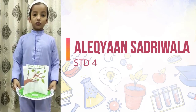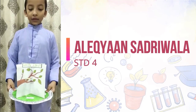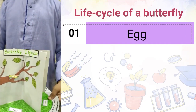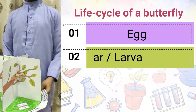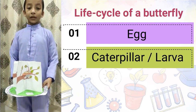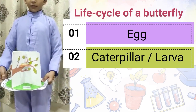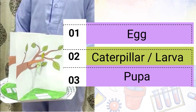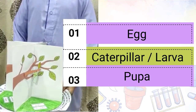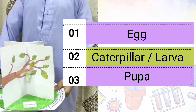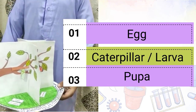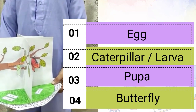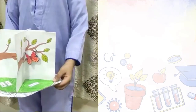Good morning. Today I will show you the life cycle of a butterfly. The life cycle of a butterfly begins as an egg. After some time it becomes a caterpillar. The caterpillar is also called a larva. When the larva is fully grown, it becomes a pupa, which is attached from a leaf. Finally, after some time, a butterfly comes out from the pupa and spreads its wings. Thank you.